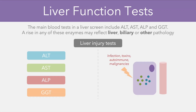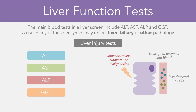When we have any of these triggers, it damages the cell, and as a result the enzymes which the cell carries end up leaking into the blood, where they're picked up on our blood tests. We do also have a few markers of synthetic liver function, which include albumin, INR, and bilirubin, but we'll focus on these in a different video.